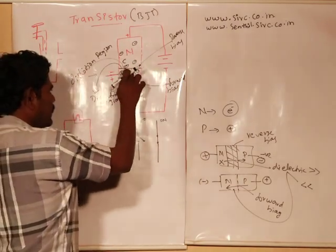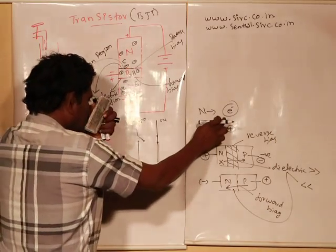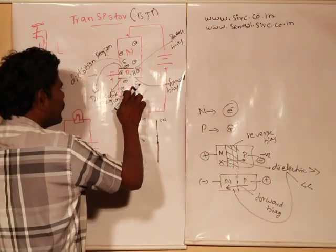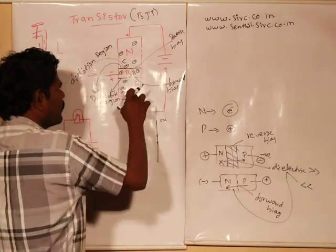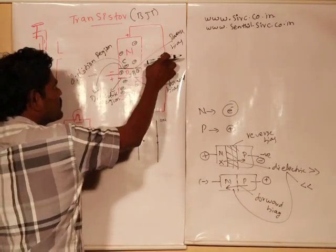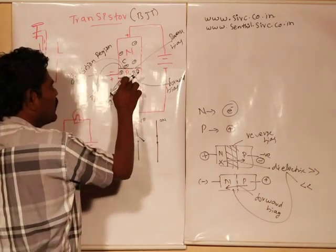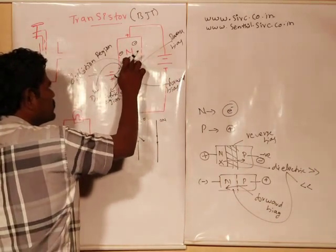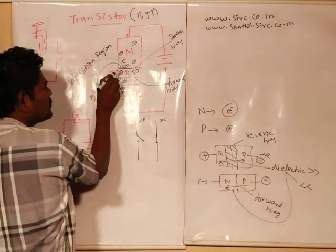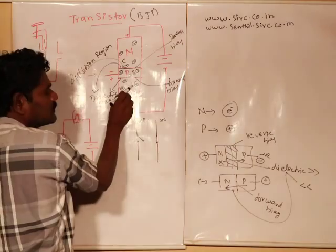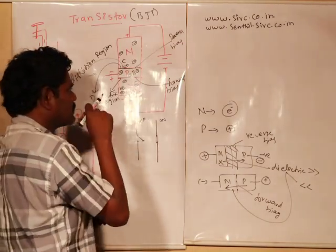We have this N, P, N material. The N material has negative electrode properties and the P material has positive electrodes. We have an experimentation like this: the plus will be connected here and minus will be connected here. So this is the collector, this is the base, and this is the emitter.